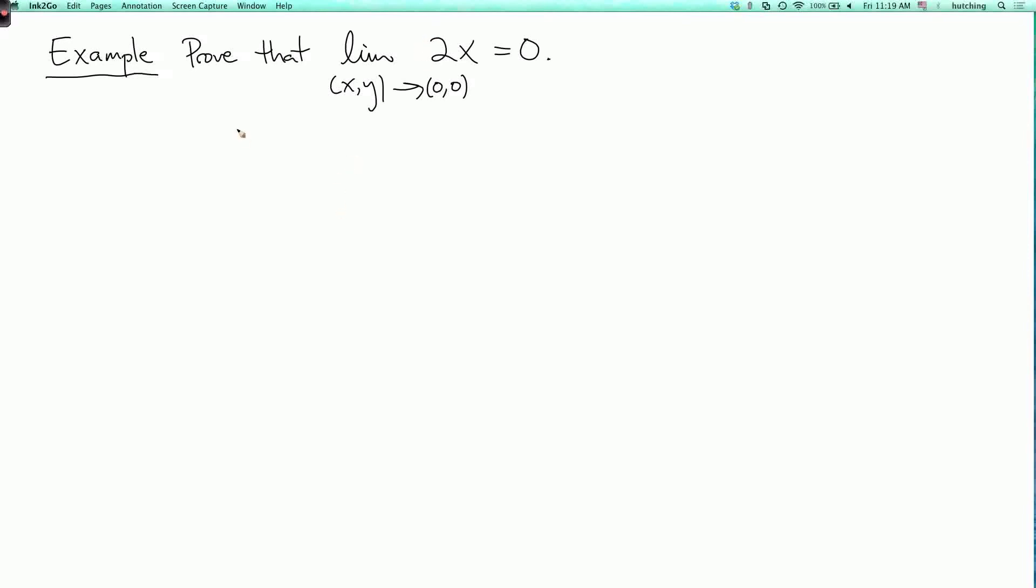So let's prove this using the definition. So given ε > 0, we need to find δ > 0, such that if (x,y) is in the domain, well, everything's in the domain, so that's sort of redundant. So that if (x,y) ≠ (0,0),